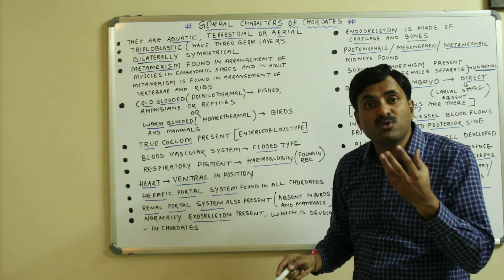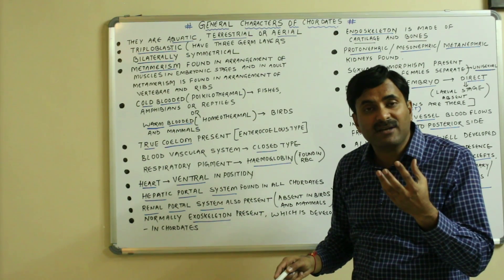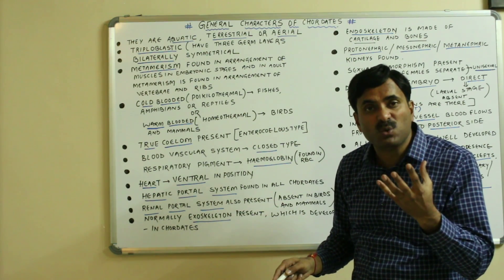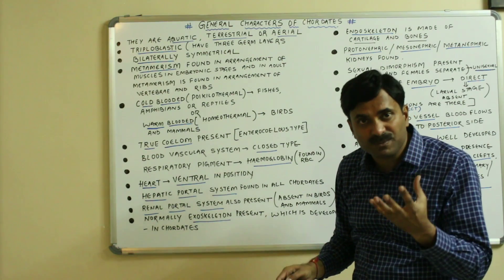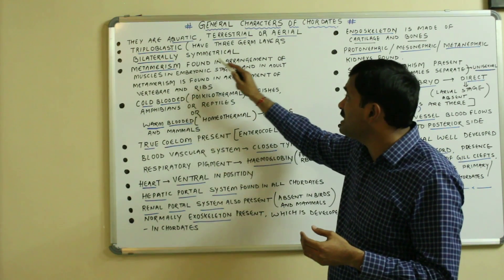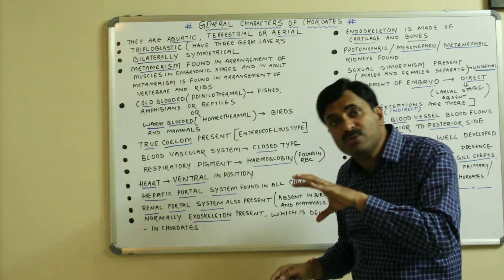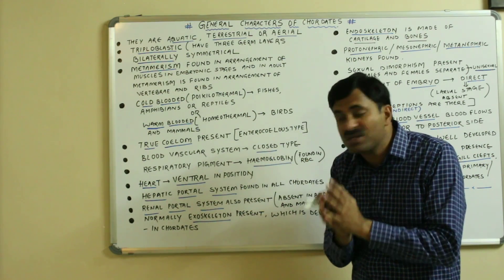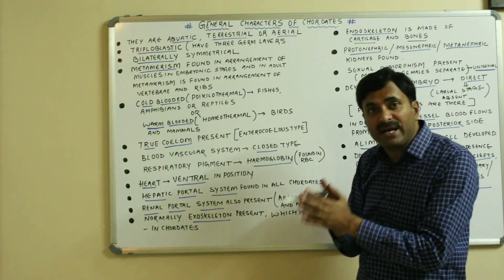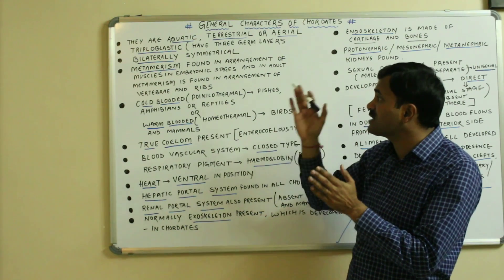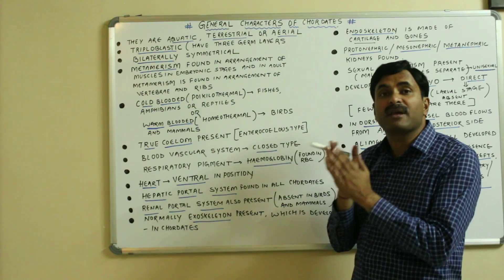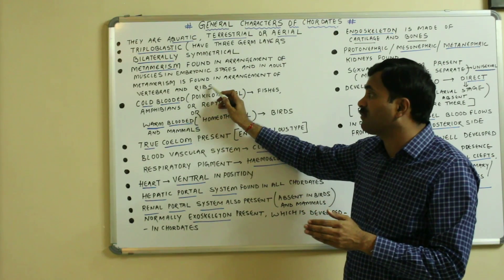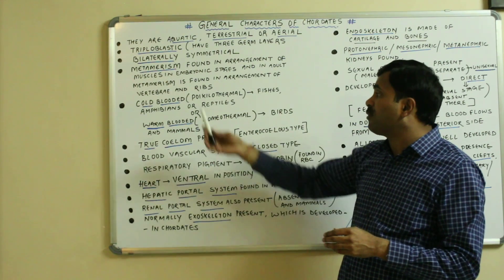True segmentation is called metamerism in technical language. Metamerism is found in the arrangement of muscles in the embryonic stages, and in adults, metamerism is found in the arrangement of the vertebrae as well as the arrangement of the ribs.